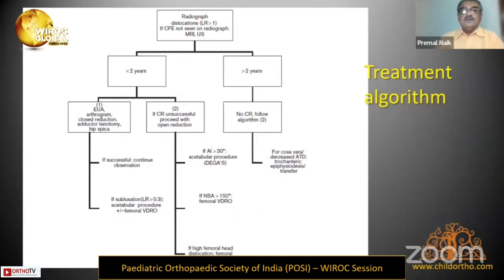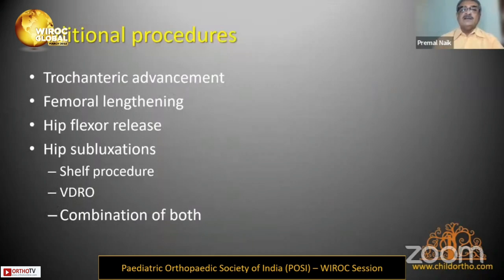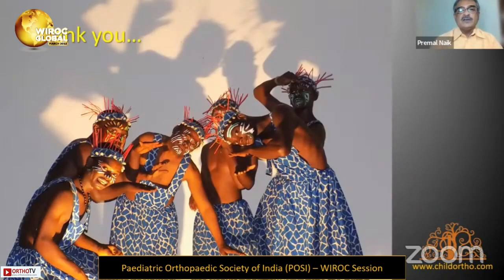This is the algorithm proposed by Dr. Johri in his article. If the capital femoral epiphysis is present, these cases should be treated more like DDH, with the caveat that they will require significant additional procedures — including trochanteric advancement or fusion, femoral lengthening, hip releases. The hip may resubluxate and require a shelf procedure, valgus derotation osteotomy, or a combination of both. Thank you.